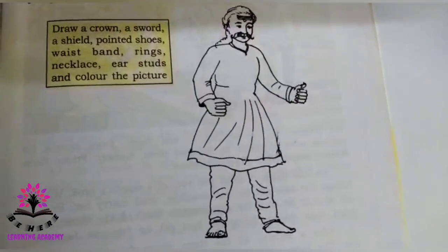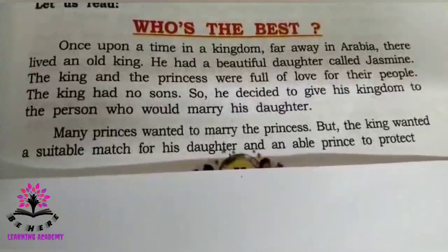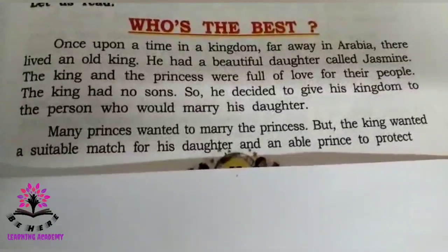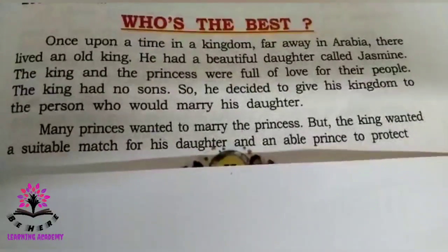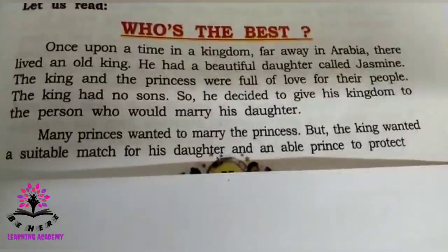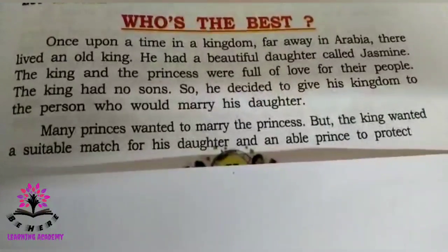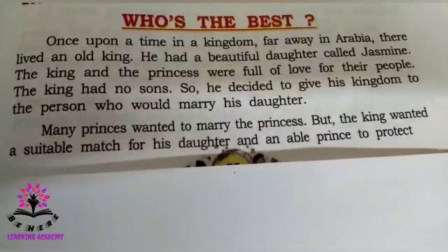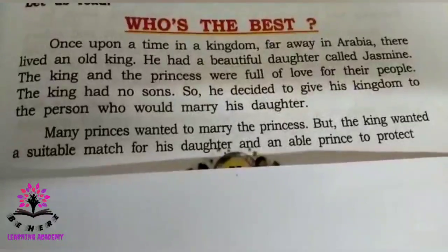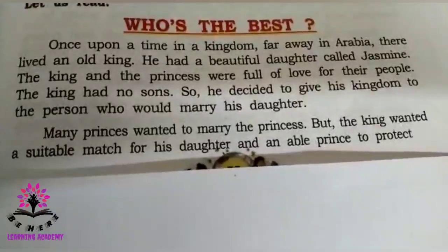When we color the picture, he exactly looks like a king. So today we shall learn a lesson: 'Who is the Best?' I shall first read the paragraph and then explain it. Once upon a time, in a kingdom far away in Arabia, there lived an old king. He had a beautiful daughter called Jasmine. The king and the princess were full of love for their people.